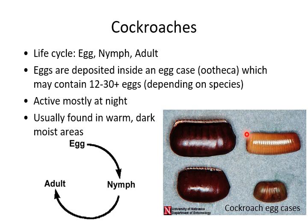This light tan, long skinny egg case on the right is from the German cockroach. Each female produces multiple egg cases during her life, and each one can contain 30 to 40 eggs. German cockroaches also have a very short life cycle — about three months — so it doesn't take long for a newly hatched nymph to reach adulthood and start reproducing. You can build up an infestation relatively quickly if you've got the right temperature, food availability, and water.